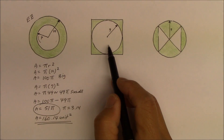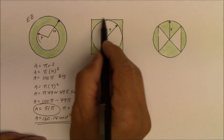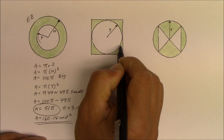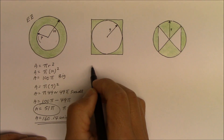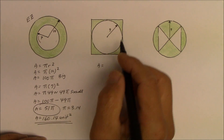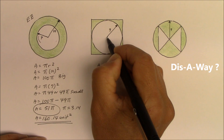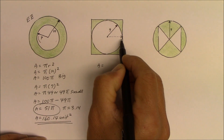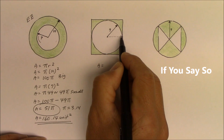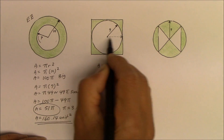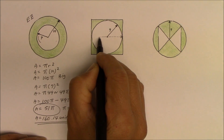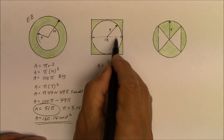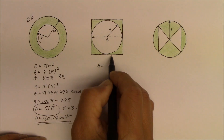Now for the second problem. The big object — the original shape you see — is a square. The radius is consistent throughout the entire circle, so if the radius is 9 units one way, it must be 9 units the other way as well. The diameter is double the radius — double 9 is 18 — and that 18 diameter happens to be the dimension of the square.